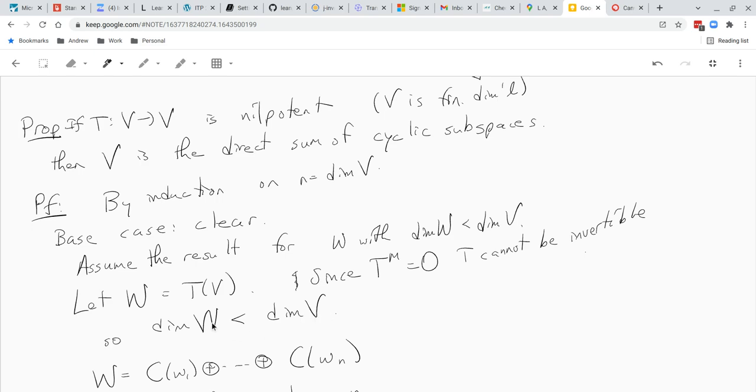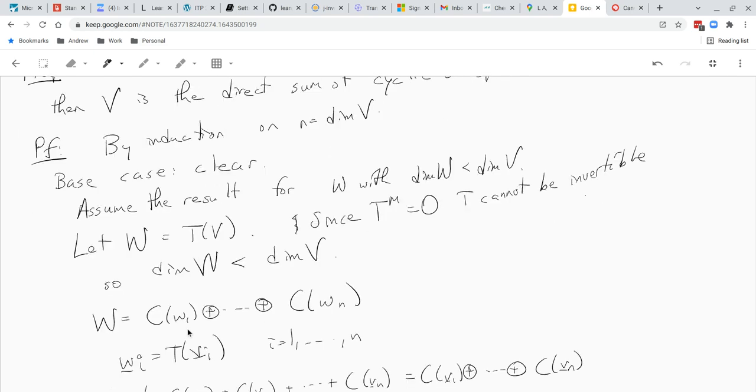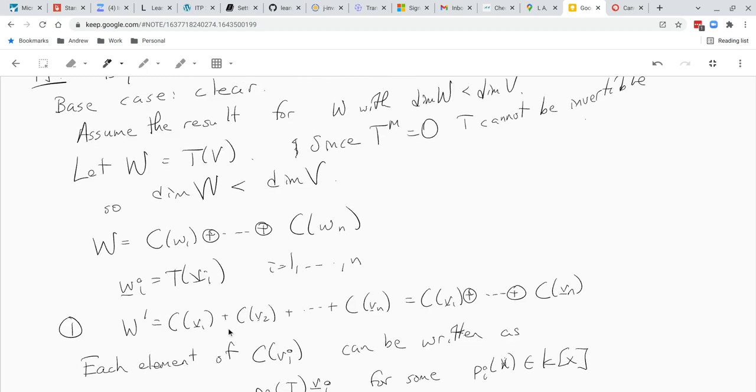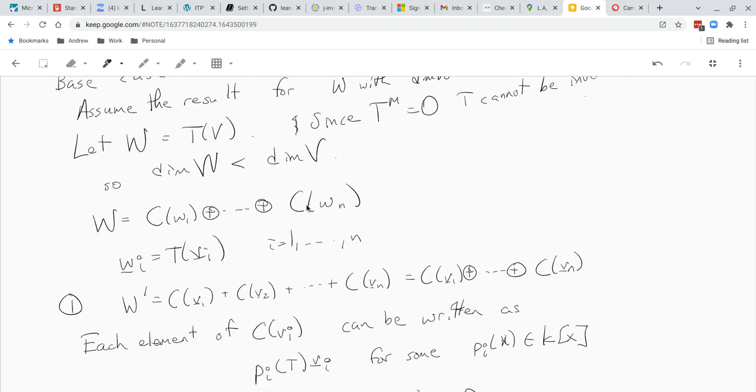In particular, we can write W as a sum of cyclic subspaces like C of W1 plus C of Wn as a direct sum. Not only that but all of these Wi's are in T of V, so we can write them as T of Vi. And now our claim is that we look at W prime as a sum of cyclic subspaces C of V1 up to C of Vn, it's a direct sum.